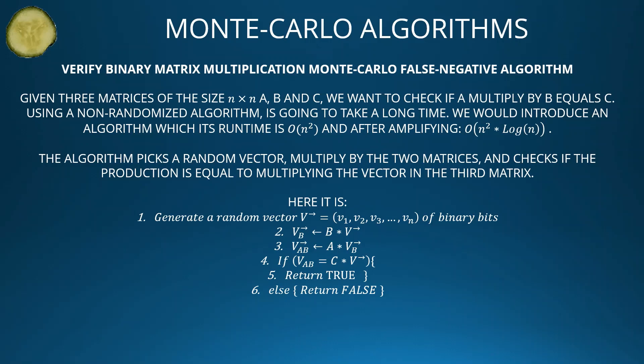Here is the algorithm. The first line generates a random binary vector v. The second line computes vb = v multiplied by matrix B. The third line computes vab by taking vb from the second line and multiplying it by matrix A. Line 4 checks if the vector vab obtained in the third line equals C multiplied by the vector v. If so, we return true; otherwise we return false.